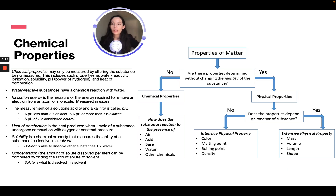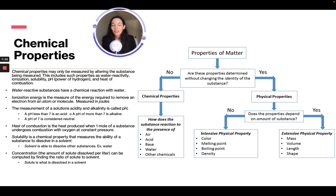Chemical properties may only be measured by altering the substance being measured. This includes water reactivity, ionization, solubility, pH (the power of hydrogen), and heat of combustion. Water-reactive substances have a chemical reaction with water. Ionization energy is the energy required to remove an electron from an atom or molecule, measured in joules. A pH less than 7 is acidic, more than 7 is alkaline, and 7 is neutral. Heat of combustion is the heat produced when one mole of a substance undergoes combustion with oxygen at constant pressure.